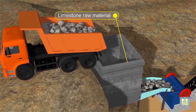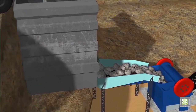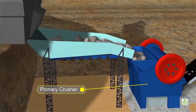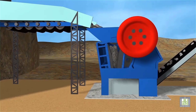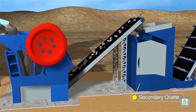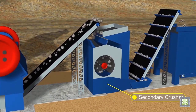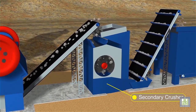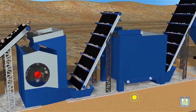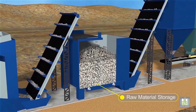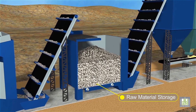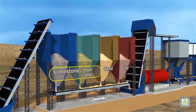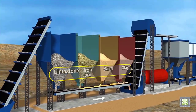Limestone and sand or rock is quarried, crushed, and transported to storage stockpiles near the kiln, where pre-blending takes place.